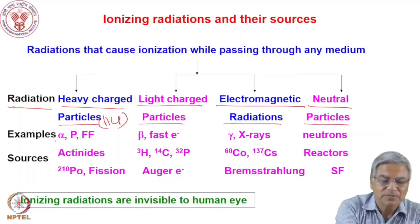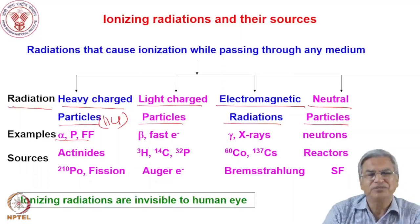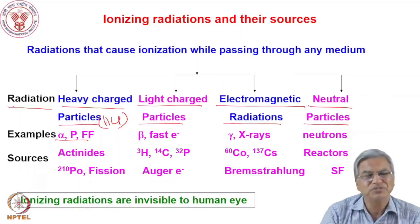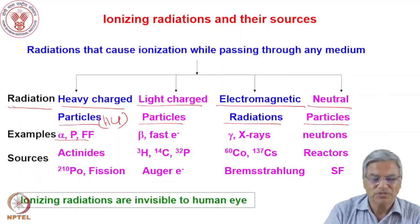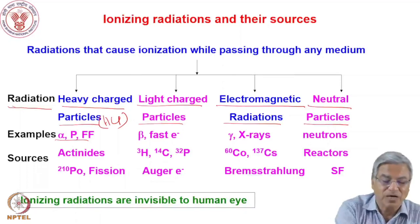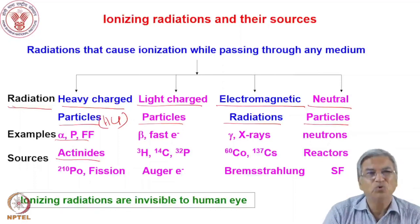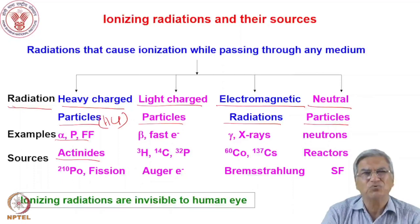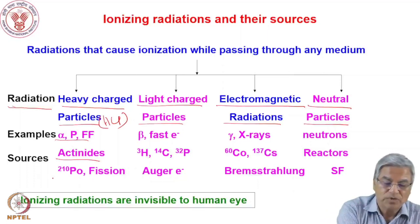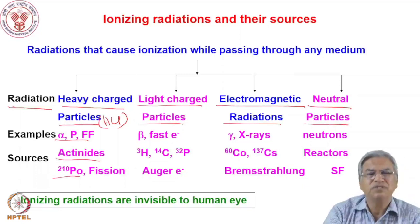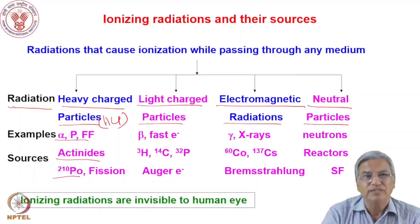The examples of heavy charged particles are alpha particles, protons, and even heavy ions. In an accelerator you can produce carbon ions, lithium ions, oxygen ions. Fission fragments, when emitted from fissioning nuclei, are heavily charged particles and their interactions are similar to heavy charged particles. Sources of HCPs: alpha particles are emitted by actinides like thorium, uranium, and plutonium. Protons are emitted in nuclear reactions or produced by accelerators. Fission fragments are emitted in spontaneous or induced fission. For example, polonium-210, plutonium-239, and radium-226 are sources of alpha particles, and californium-252 is a source of fission fragments.